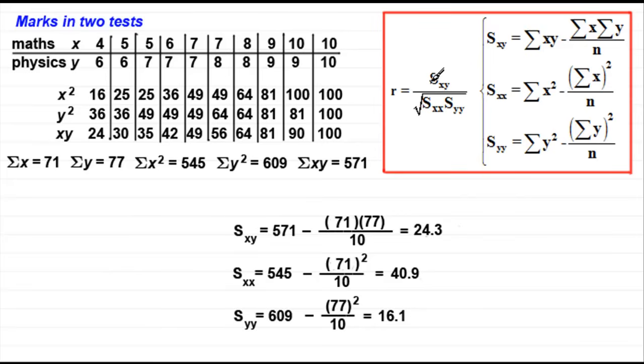So when it comes to working out r, the product moment correlation coefficient, if you do this sum—sxy all divided by the square root of sxx times syy—you might like to try that. You should find that you get r equals 0.95 to two decimal places. Remember that r comes out between or should come out between minus 1 and 1 inclusive. If you get a value outside that range, you know you would have made a mistake.